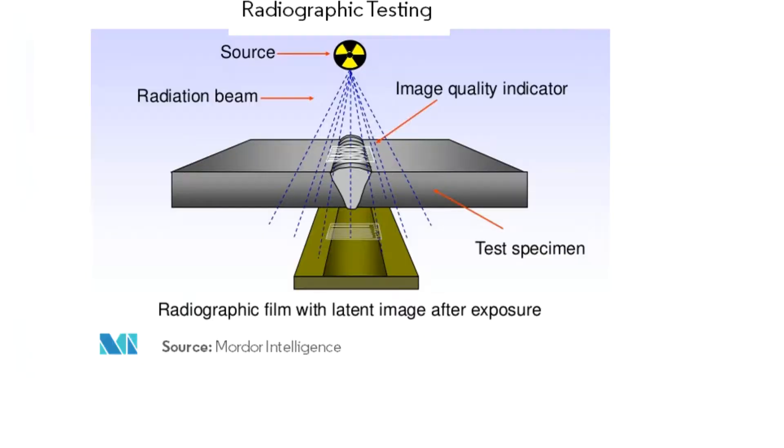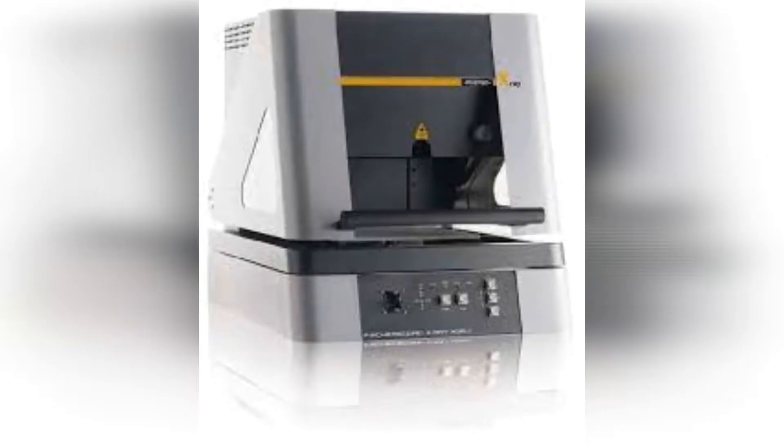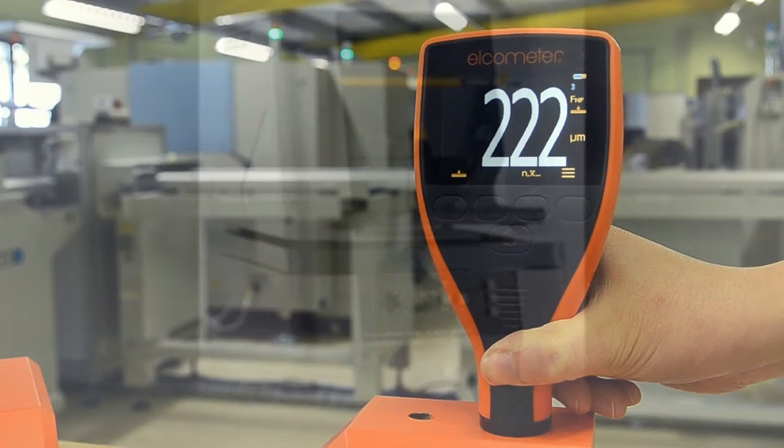Coating Thickness Measurement. The measuring method chosen will depend on the combination of material and the issue at hand. There is no single standard measuring procedure suited to measuring all coating thicknesses. There are two types of testing methods: destructive and non-destructive testing.